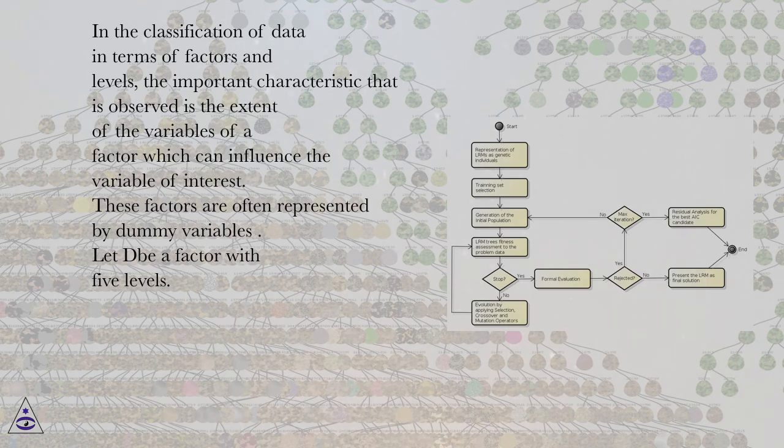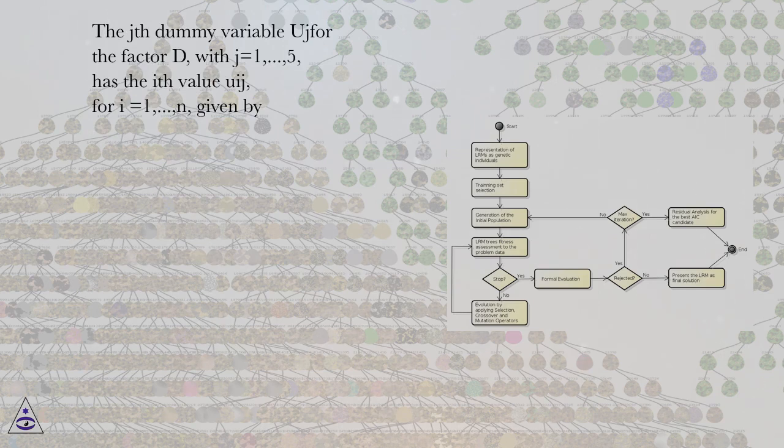These factors are often represented by dummy variables. Let's be a factor with five levels. The jth dummy variable Uj for the factor D, with j equals 1,...,5, has the ith value Uij, for i equals 1,...,n, given by.